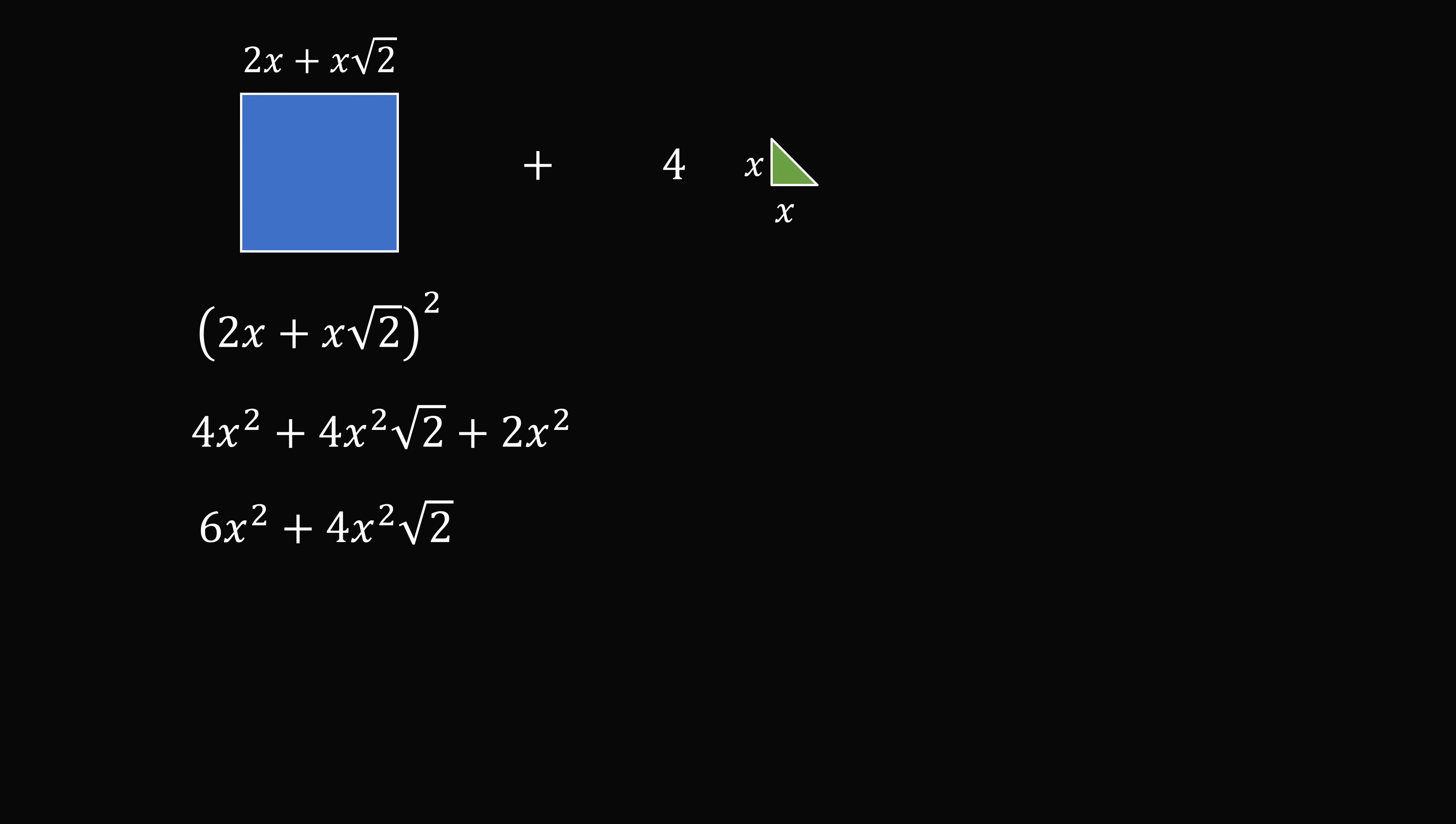The area of each right triangle is equal to x times x all over 2, which is x squared over 2. We want 4 of these triangles. So this simplifies to be 2x squared.